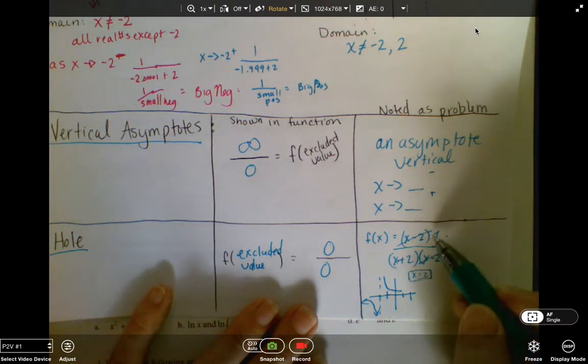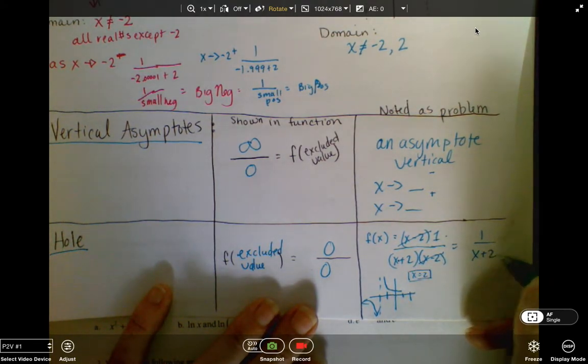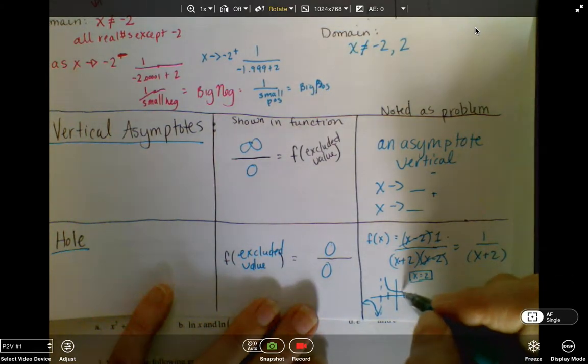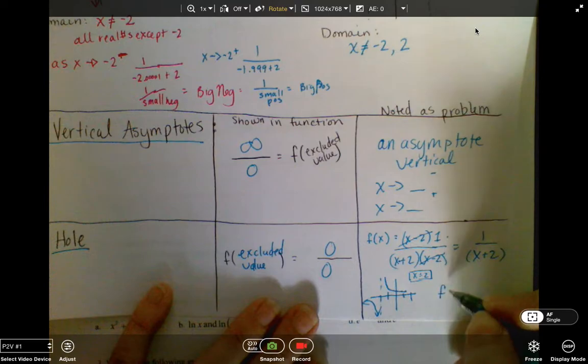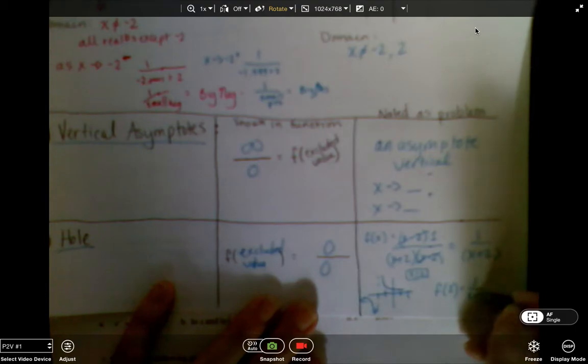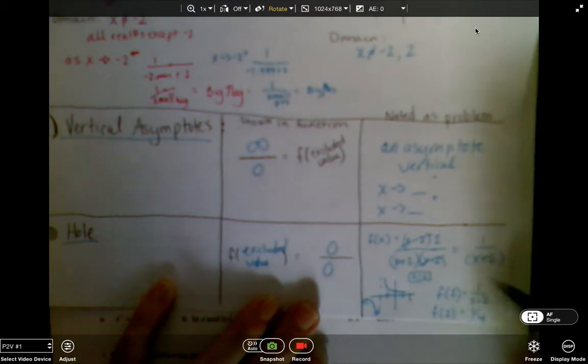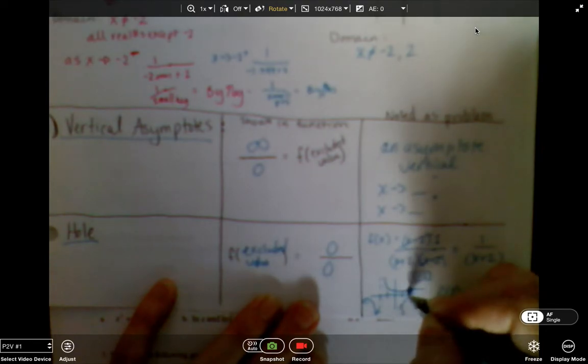But it's easier to calculate if we only look at 1 over x plus 2. So we simplified it, so if I plug in 2 into this, I'm going to be getting close, close, close, as close as I can to 1 over 2 plus 2, which is going to be 1 fourth. So I'm going to get closer and closer and closer and closer to 1 fourth. So this right here...